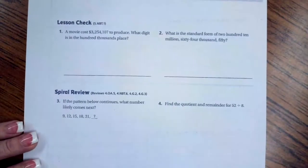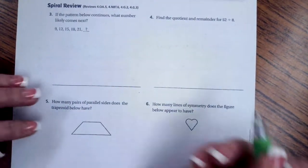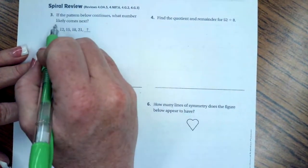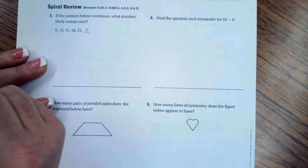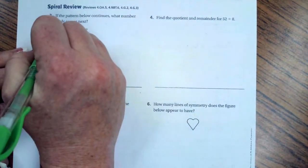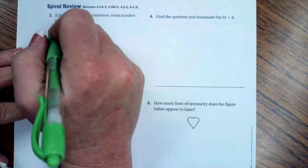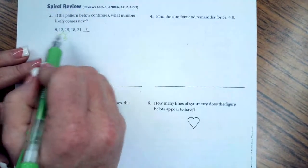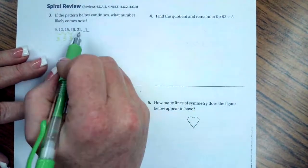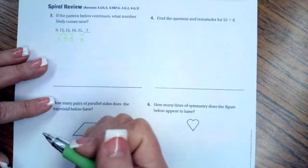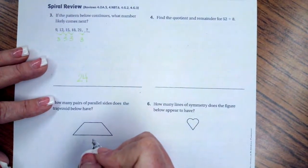We're going to go over onto the back where you guys are going to do the lesson check, just like always. We're going to do the spiral review. It says, if the pattern below continues, what number likely comes next? I'm going to say, what's the difference between 9 and 12? Well, 9, 10, 11, 12, that's 3. How about 12 to 15? 12, 13, 14, 15. That's 3. So now I see a pattern. 15, 16, 17, 18. That's 3 again. So now I'm going to go over to 21, and I'm going to add 3. 21, 22, 23, 24. 24.